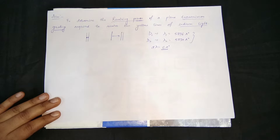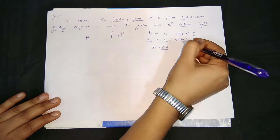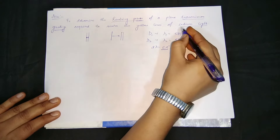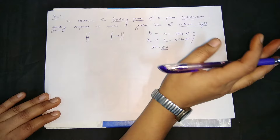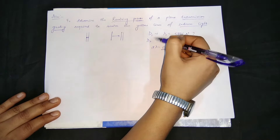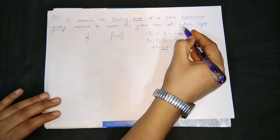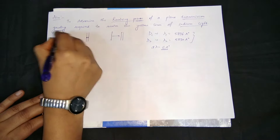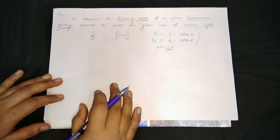The wavelength difference between these two lines, D-lambda, is very small — that is 6 angstrom. So this difference can be neglected in other experiments, and you can safely consider sodium light as monochromatic light. But in the experiment where we need to see these wavelengths separately, we will resolve them with the help of a transmission grating.